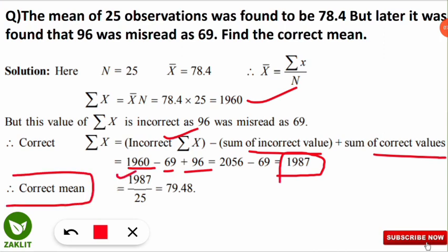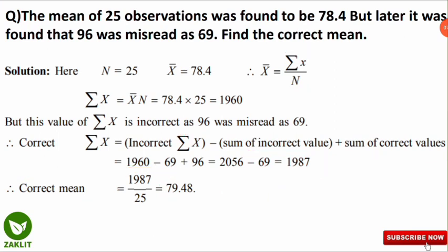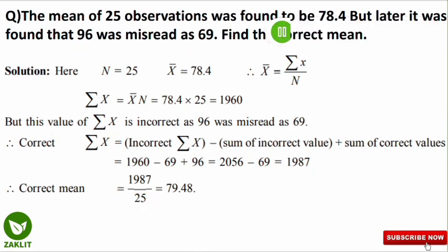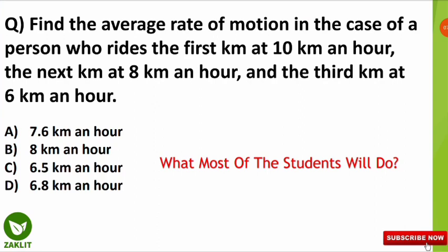Now divide the correct ΣX by the number of observations: 1987 / 25 = 79.48. So the correct mean is 79.48. Using the formula — Incorrect ΣX minus the incorrect value plus the correct value — gives the correct ΣX, and dividing by n gives the correct mean whenever a value is misread or mistyped.